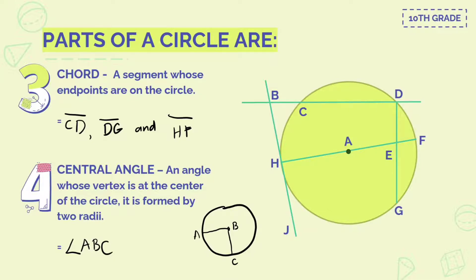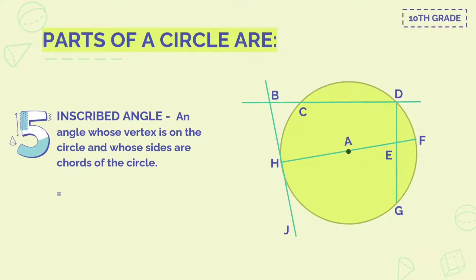Next, number five — the last part of a circle — it is called inscribed angle. An angle whose vertex is on the circle and whose sides are chords of the circle. So the inscribed angle here is angle BDG.